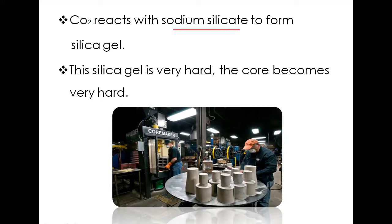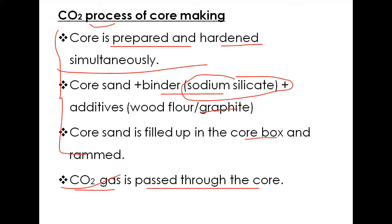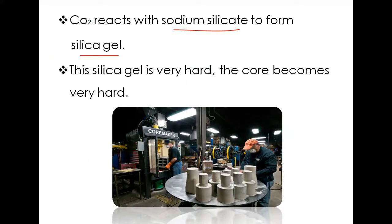The CO2 gas reacts with the sodium silicate to form a silica gel. This silica gel improves the properties of the core sand — the core becomes very hard automatically. The silica gel bonds with the core sand grains, and the core grains get into a hardened condition. This way the core maker can prepare a number of cores and store them for use.